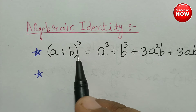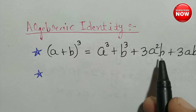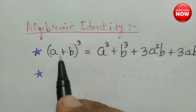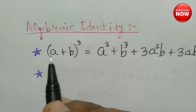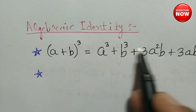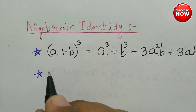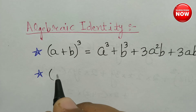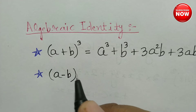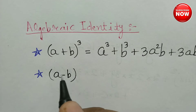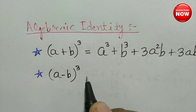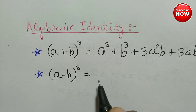So this expansion uses a plus b whole cube. If there is a binomial with a plus sign, we will use the (a + b) whole cube identity to expand it. If there is a binomial with a minus sign, we will use the (a - b) whole cube identity.